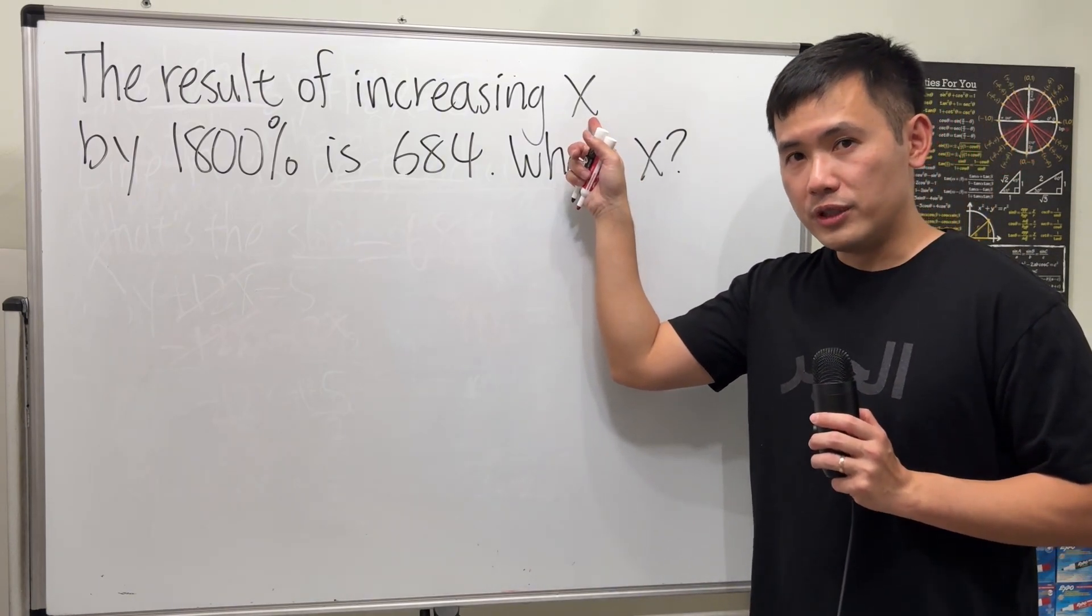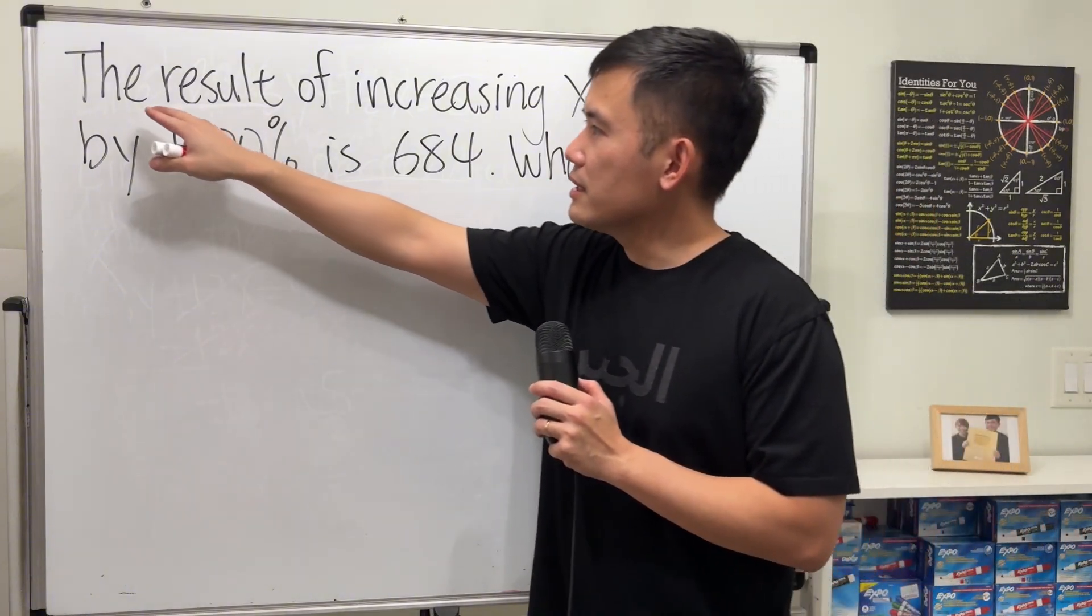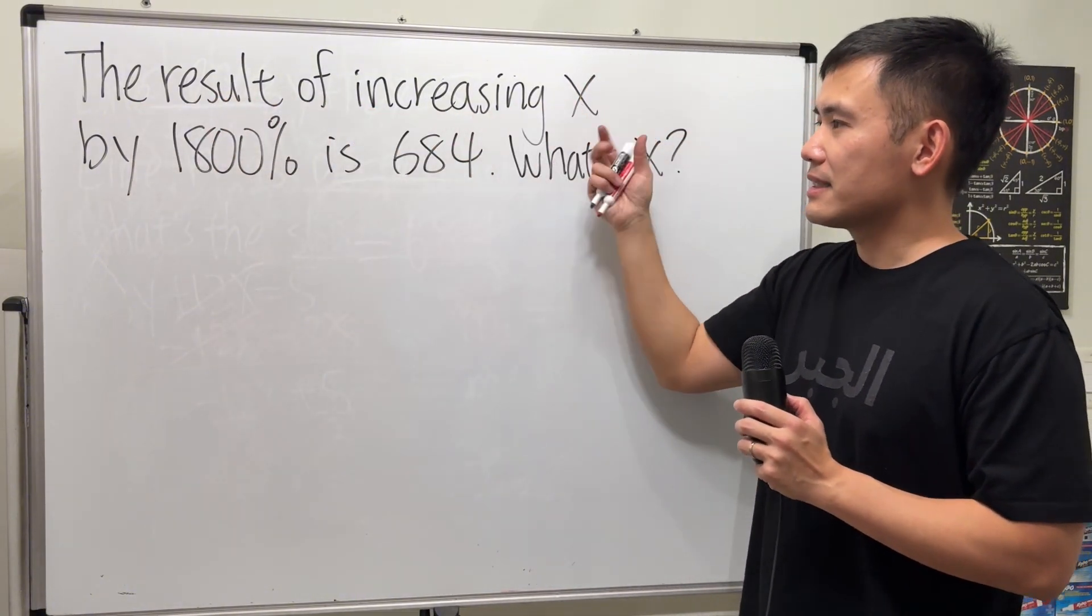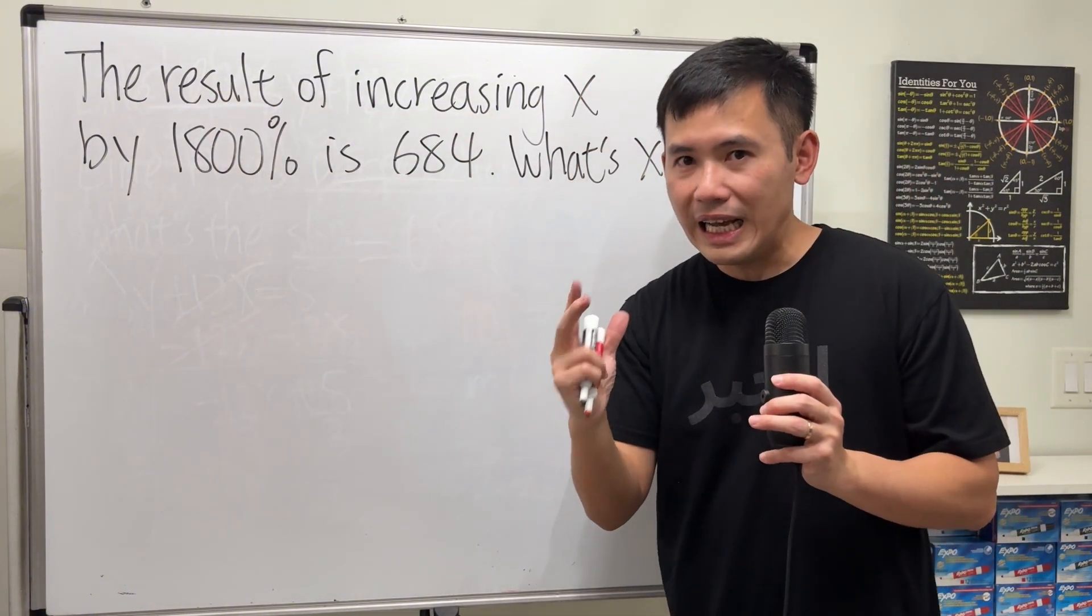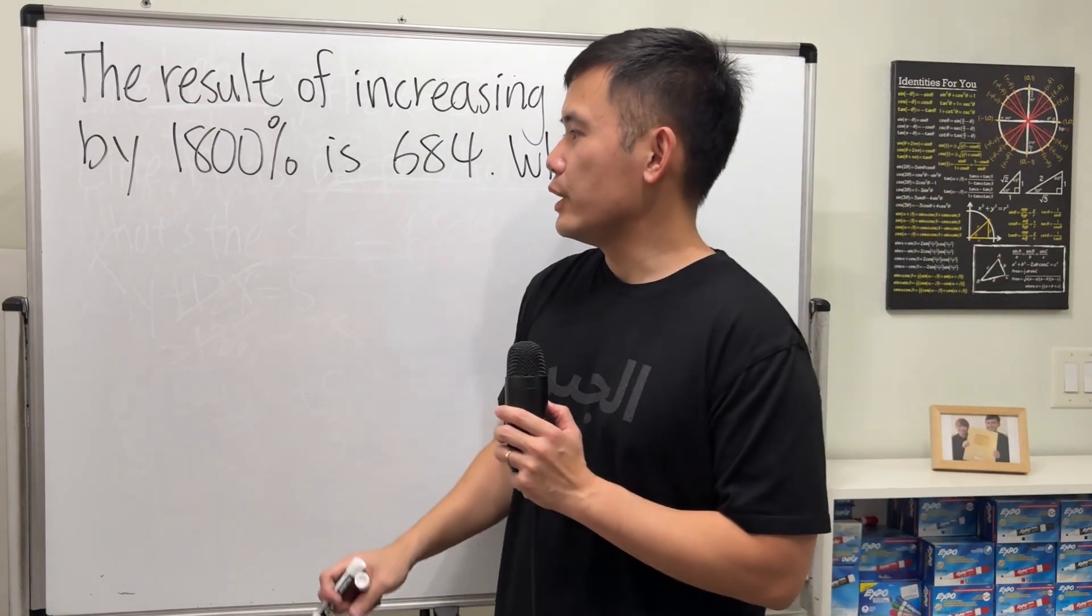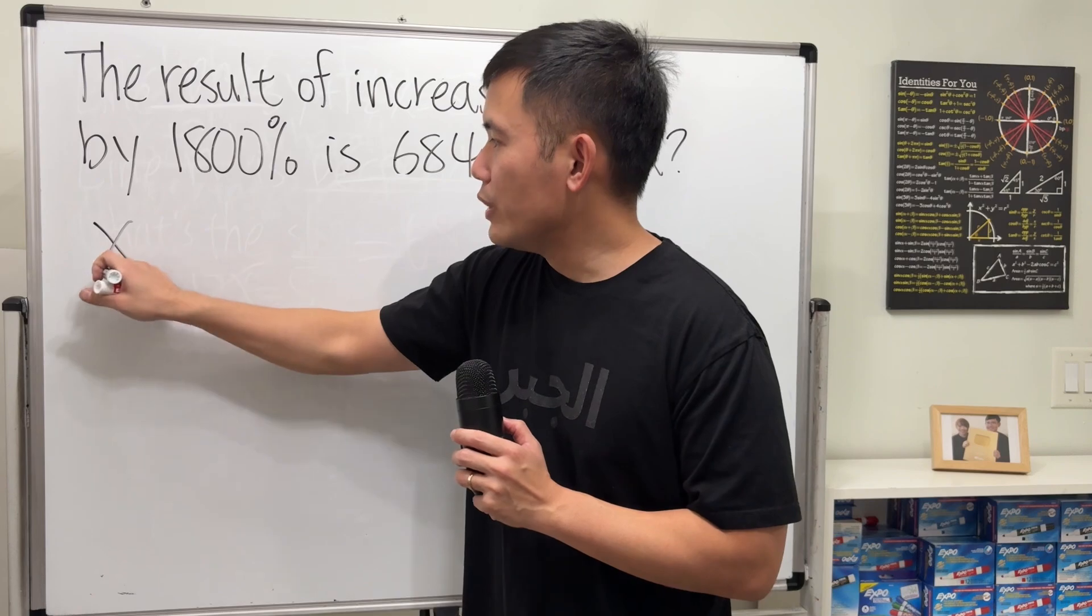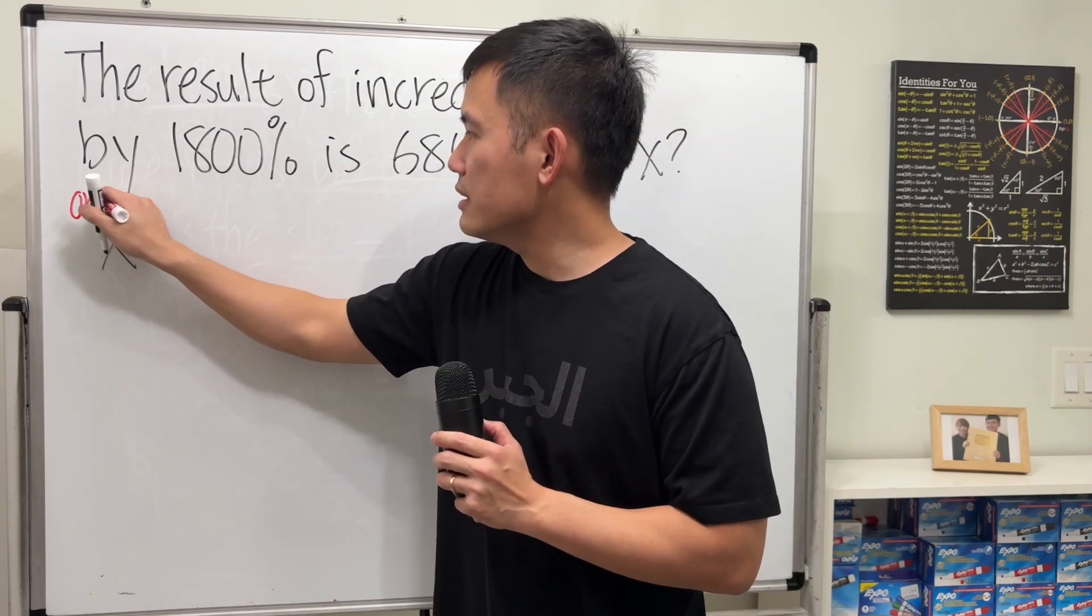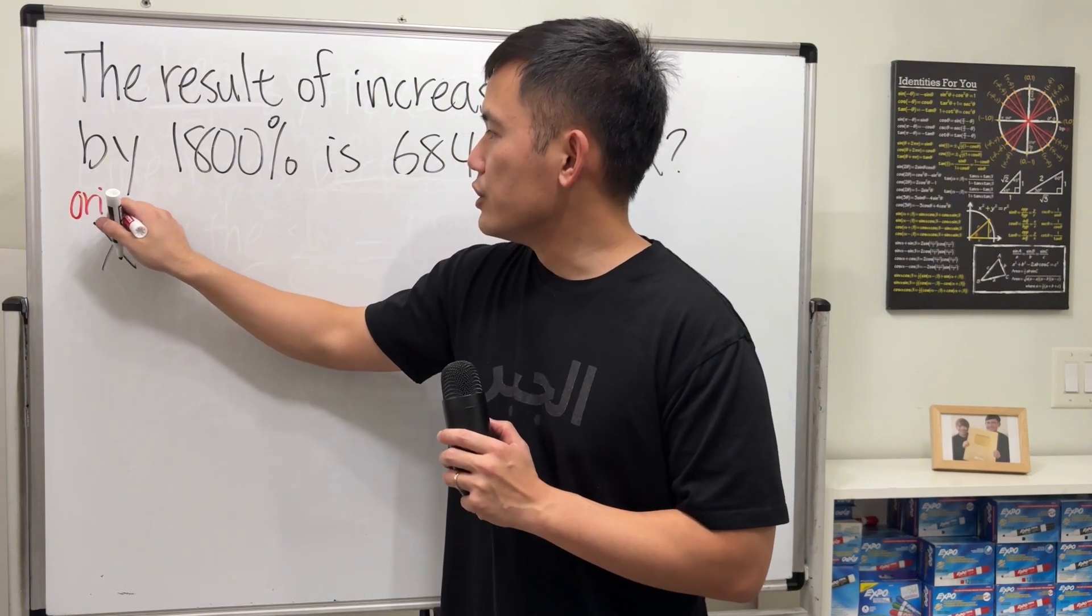Well, it says the result of increasing x. So we originally have x, and we're going to increase that. I'm going to set up the equation. Originally, we have x. So this right here is the original amount.